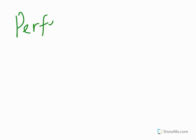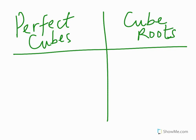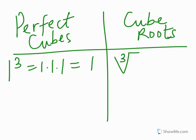The same thing is what we have for perfect cubes and cube roots. So let's start with 1 also. 1 raised to power 3, or 1 raised to exponent 3: 1 times 1 times 1, which gives you 1. Then, this means that the cube root of 1 is 1, because when you multiply 1 three times, it gives you 1.